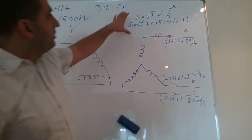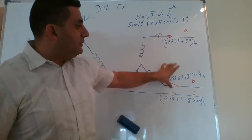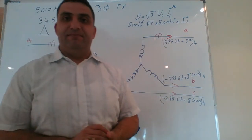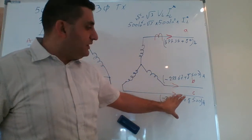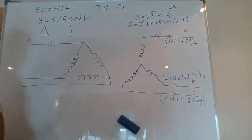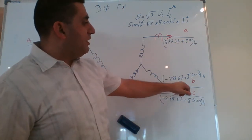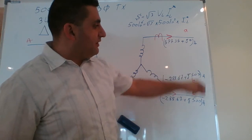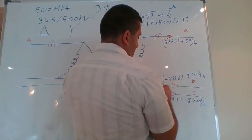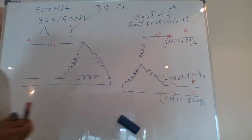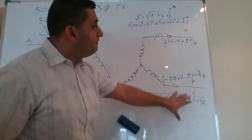After calculation, using phase A as reference with angle zero, I add minus 120 degrees for phase B and plus 120 degrees for phase C. The results are: Ia = 577.35 + j0; Ib = −288.67 + j500; Ic = −288.67 − j500. Now I go back to calculate the current on the primary delta side.